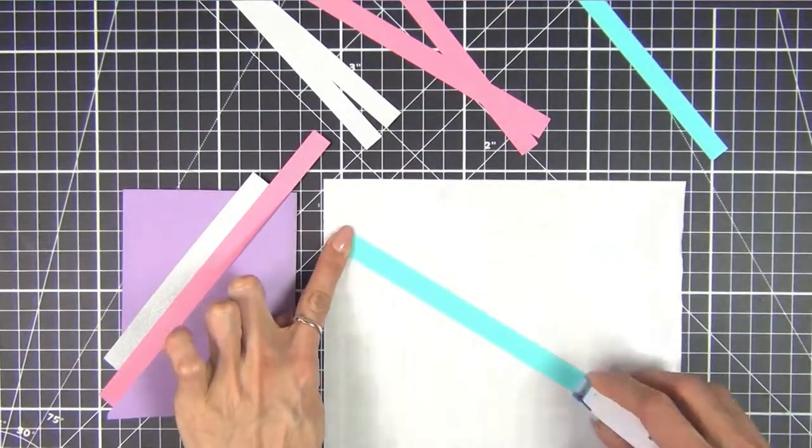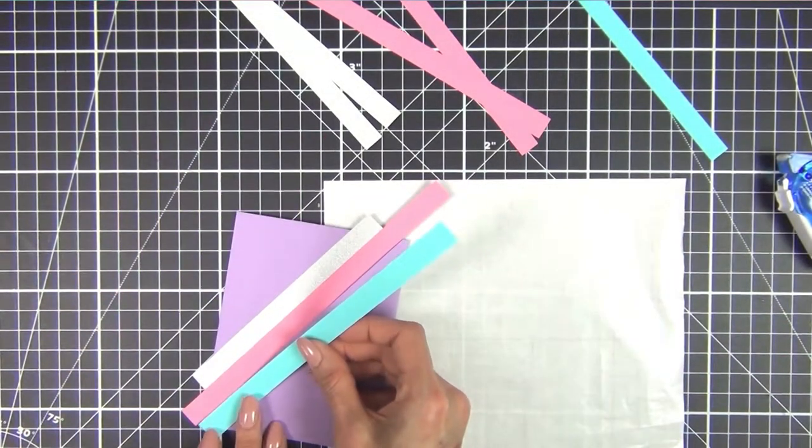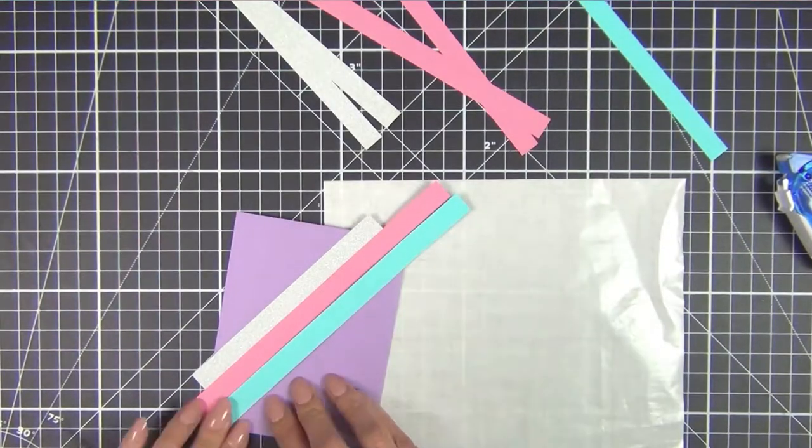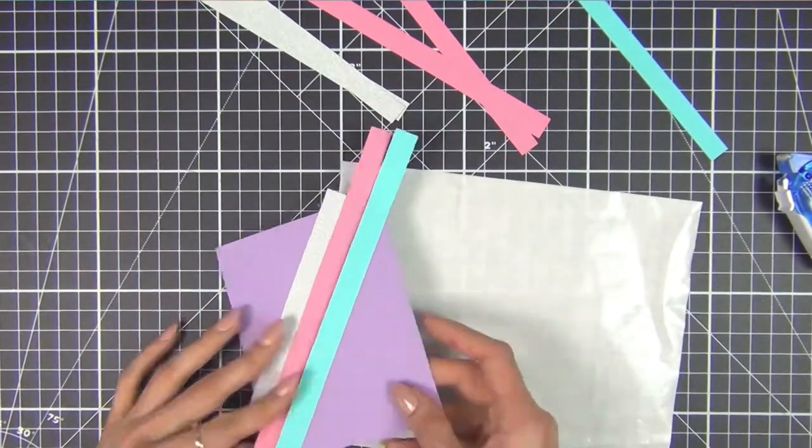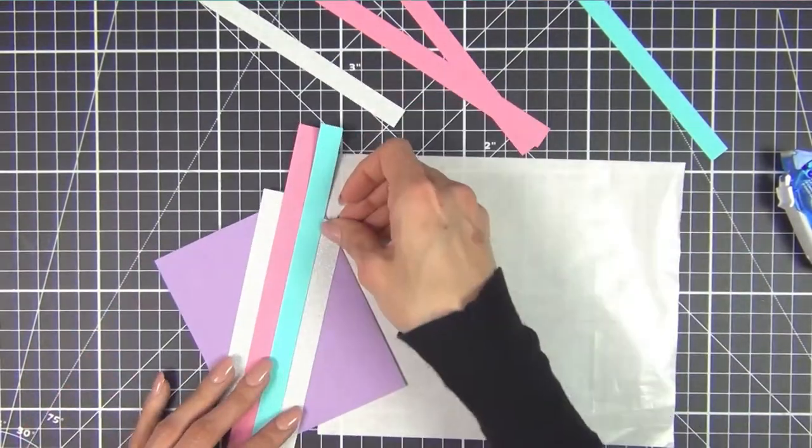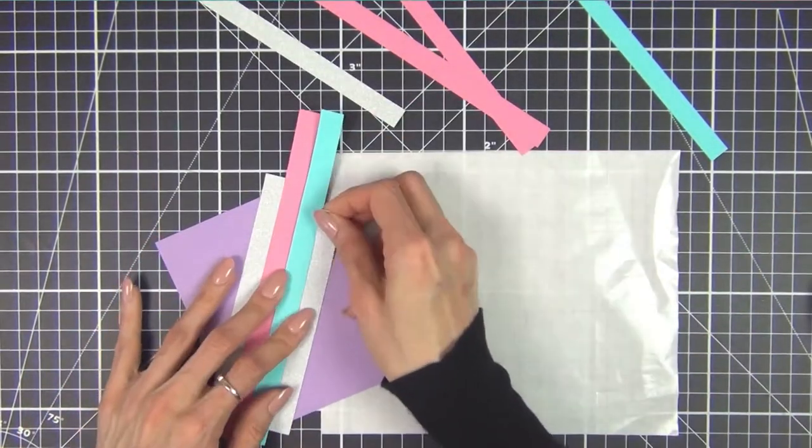I cover the entire bottom half, but make sure to only add two strips on the top because I want to leave a blank space up there for the numbers I'll be using to indicate the age the recipient is turning.